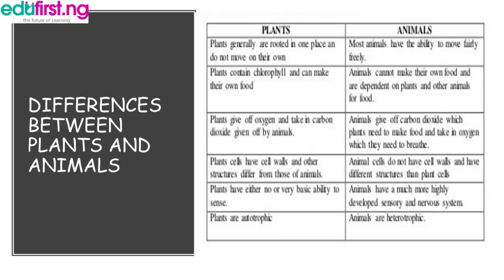Now we're going to consider the differences between plants and animals. Plants generally are rooted in one place — they do not move on their own. In the case of animals, they have the ability to move. Plants contain chlorophyll and can make their own food, while animals cannot make their own food; they are dependent on plants and other animals for food.